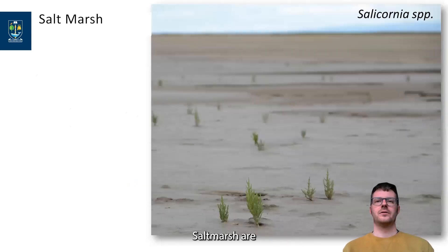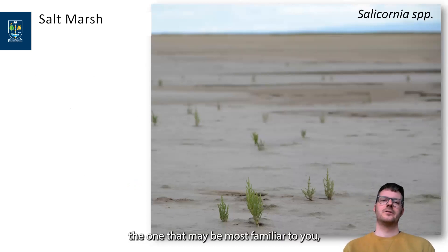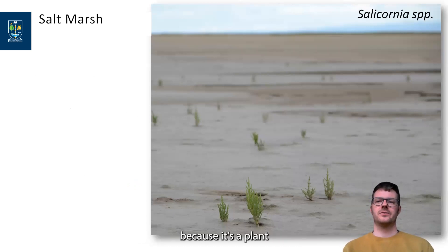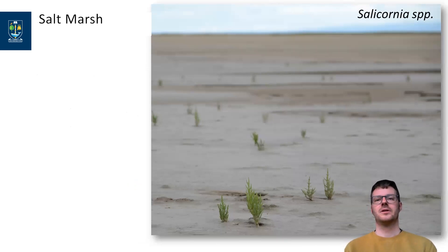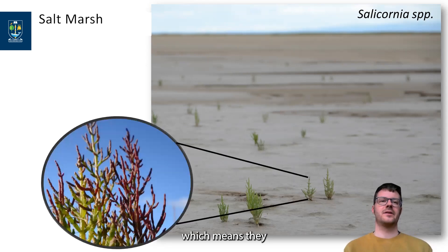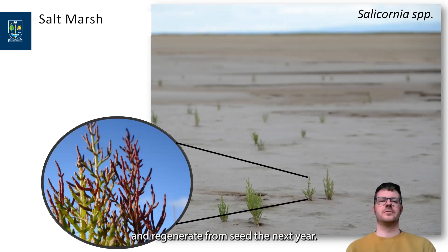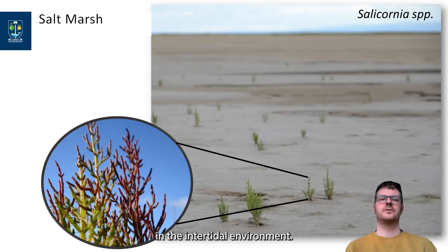Salt marshes are more temperate habitats. This genus, Salicornia, is the one that may be most familiar to you, because it's a plant that you sometimes find also on your plate. It's an edible, succulent plant that is sold sometimes as a delicacy. These plants take up water and salt, which builds up over the year inside the plant, and they will eventually die off in the winter and regenerate from seed the next year. So these are annual plants that have adapted to growing in the intertidal environment.